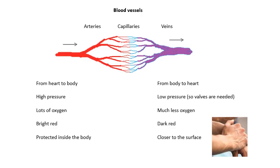Arteries are protected — they are deep inside the body. If you look at the outside of your body, like on your wrist, you can actually see your veins under the skin, but your arteries are deep inside because the blood they carry is more precious. If you cut an artery, the blood would come squirting out. If you cut a vein, the blood trickles out because the pressure in a vein is a lot lower.